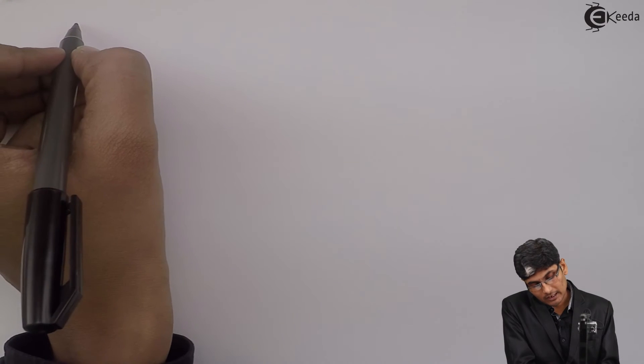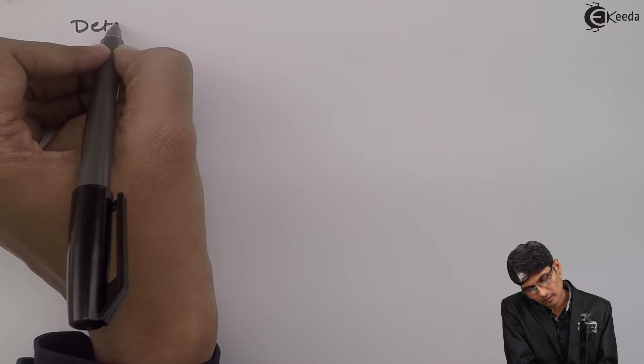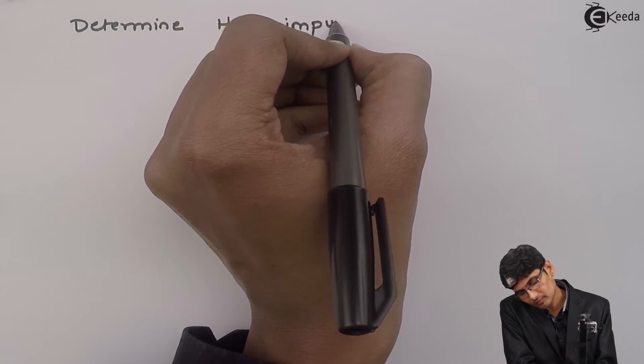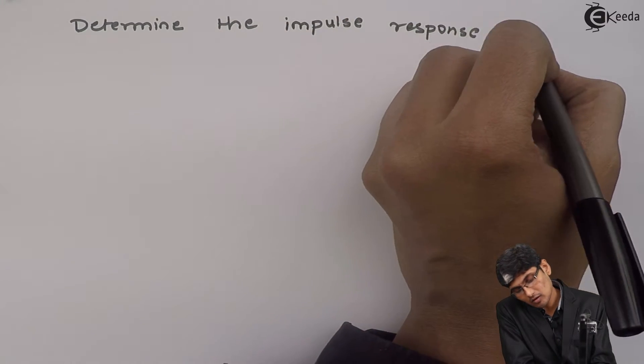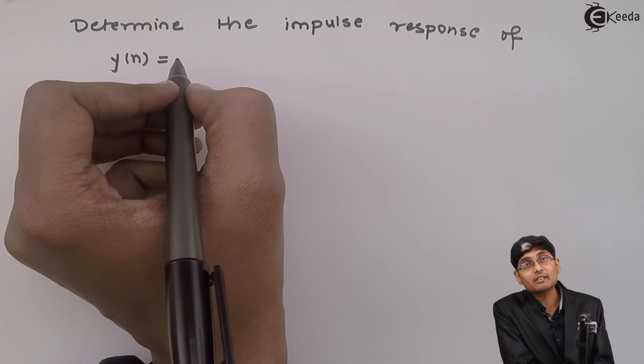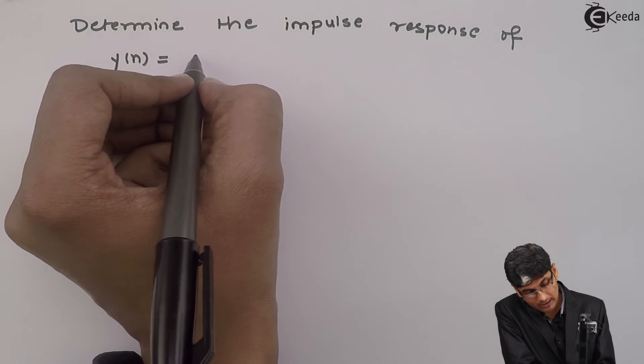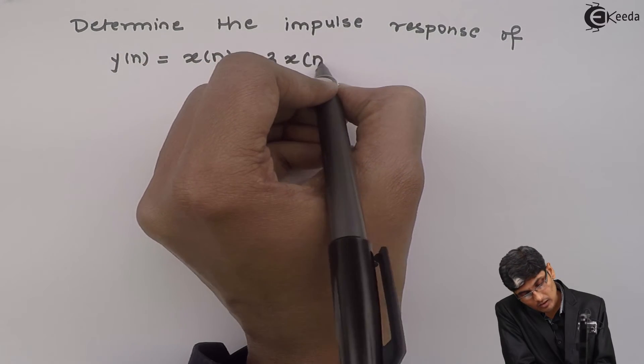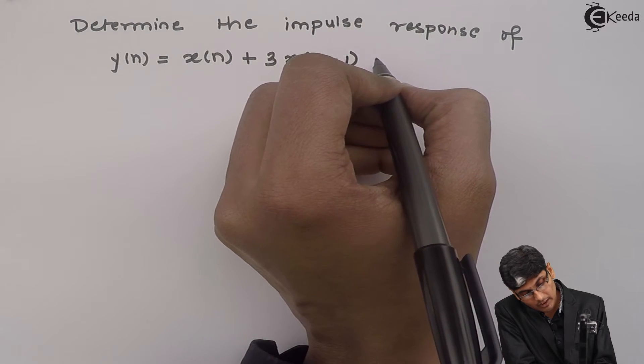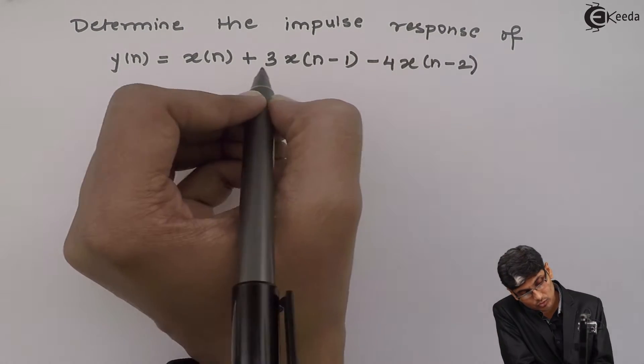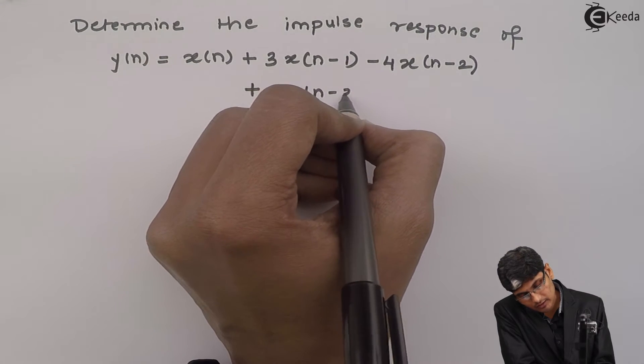Hello friends, so let us determine the impulse response of a system which is characterized by a difference equation as y of n equals to x of n plus 3 x of n minus 1 minus 4 x of n minus 2 plus 2 x of n minus 3.